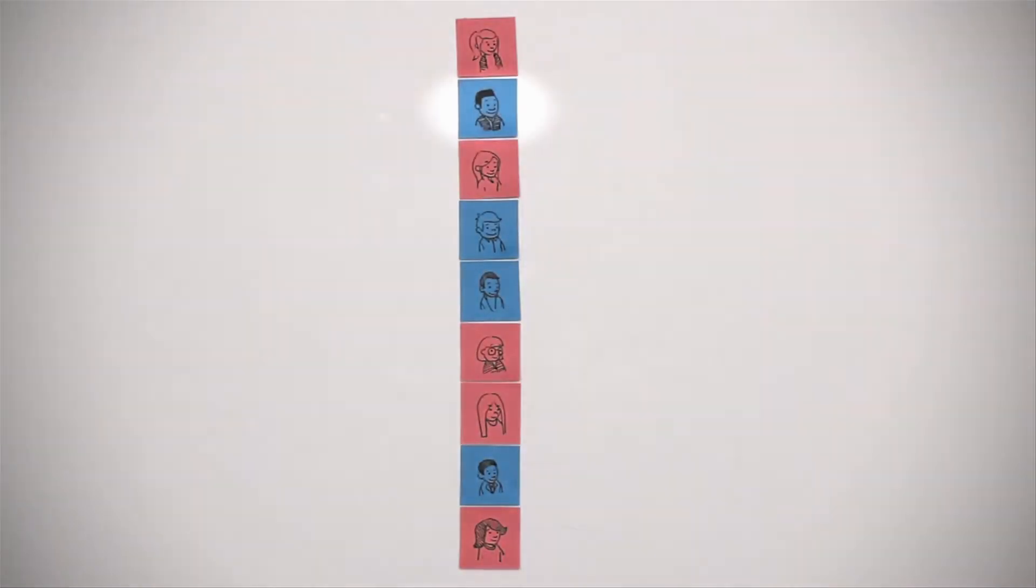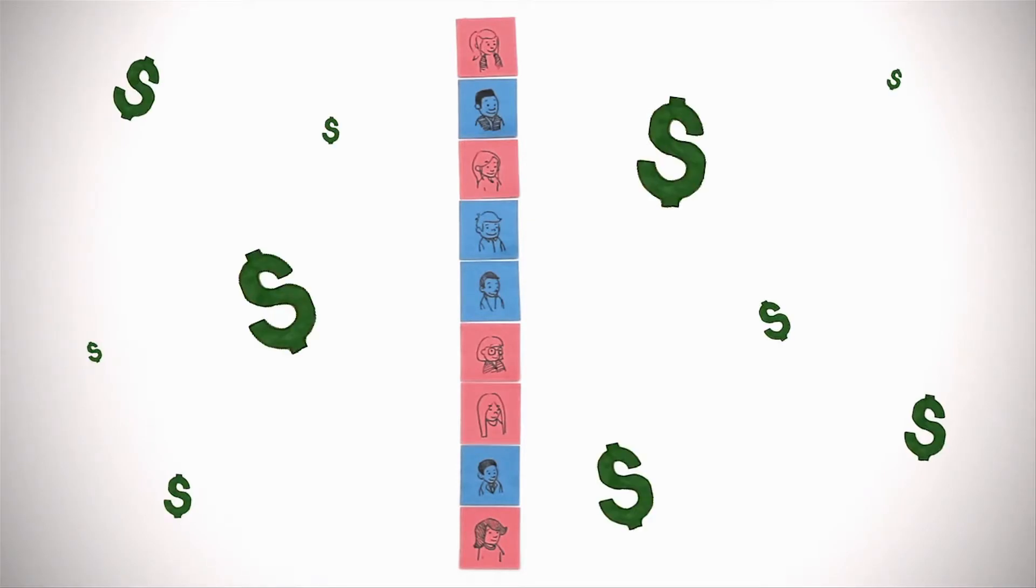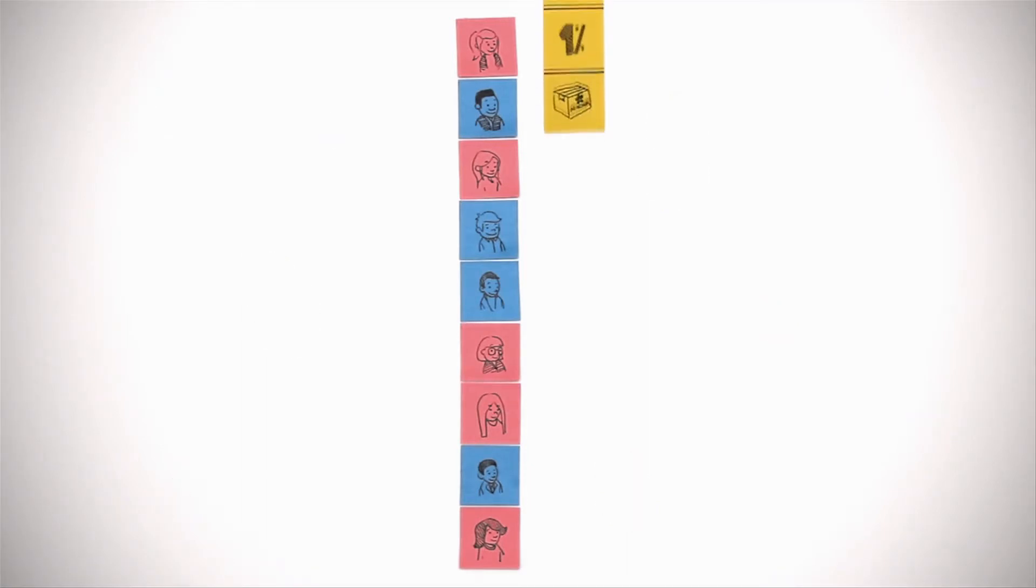After Lucy started helping her first level, they started helping their first levels, who in turn started helping their first levels. And a really interesting thing happened. Lucy and her organization started making a lot of money. And that's because with Unilevel commissions, the deeper you build your organization, the more commissions you earn.